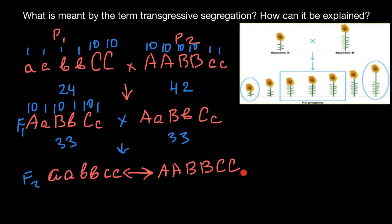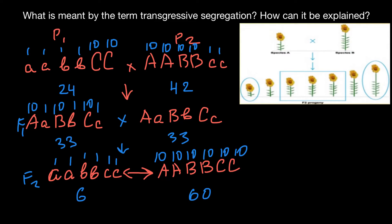In the F2 generation, the genotype with all recessive alleles — small a, small a, small b, small b, small c, small c — would produce a plant only 6 cm tall. The genotype with all dominant alleles — capital A, capital A, capital B, capital B, capital C, capital C — would produce a phenotype of 60 cm. The range of phenotypes in F2 is therefore greater than in the parental generation or the F1 hybrids.